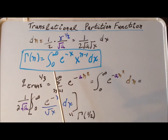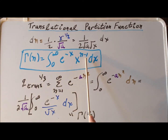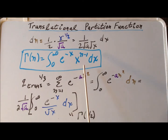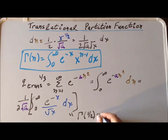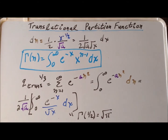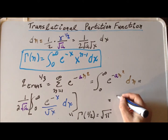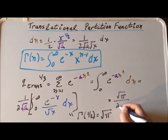The gamma function is defined as the integral from 0 to infinity of e to the minus x times x to the n minus 1. Since we have x to the minus one-half in the integrand, this corresponds to the gamma function of one-half, where one-half minus 1 equals minus one-half. The gamma function of one-half equals the square root of pi. Therefore, the cube root of the translational partition function equals the square root of pi divided by 2 times the square root of a.